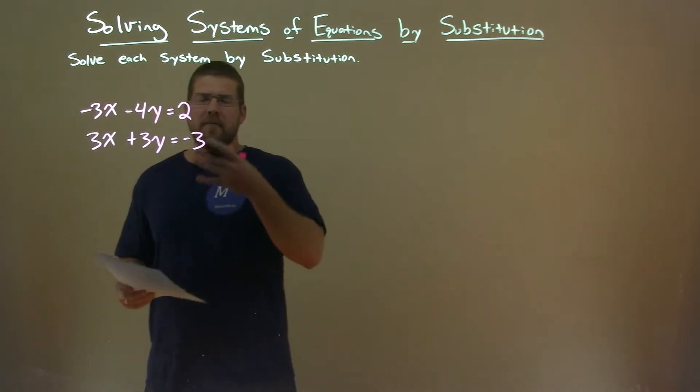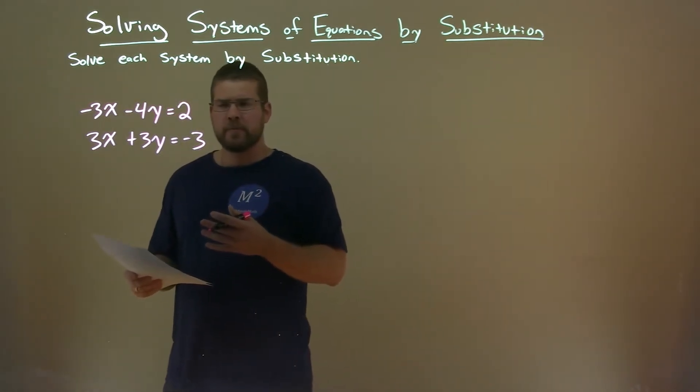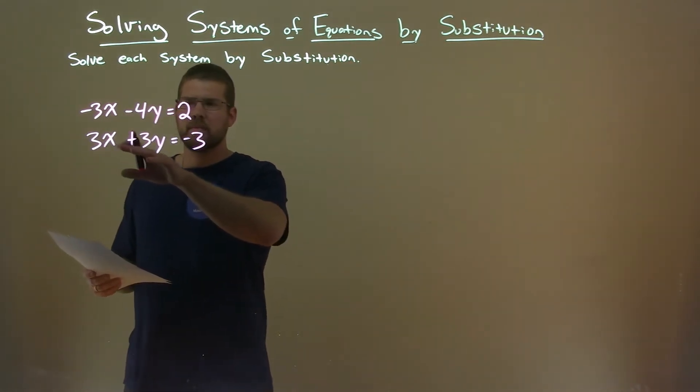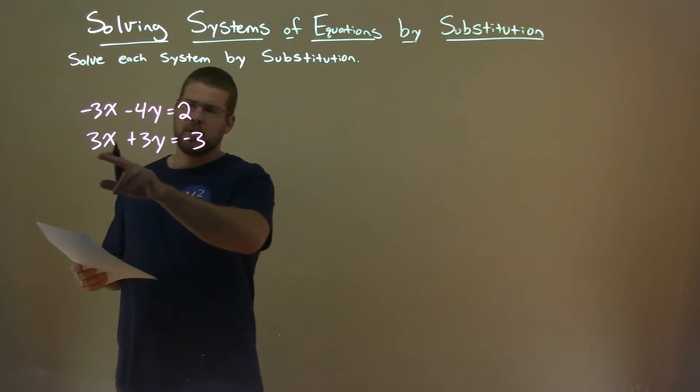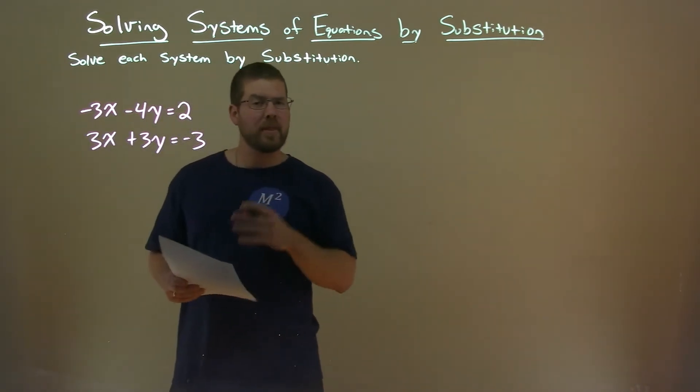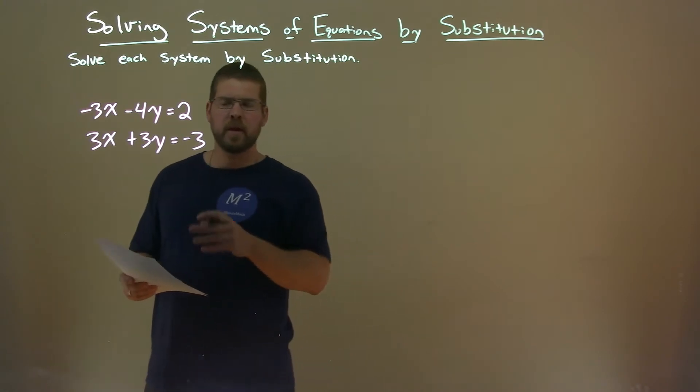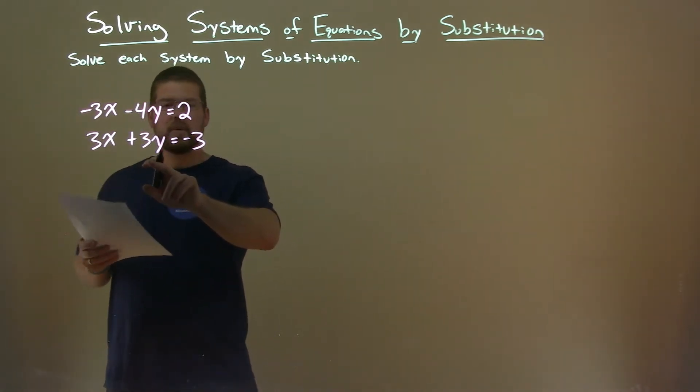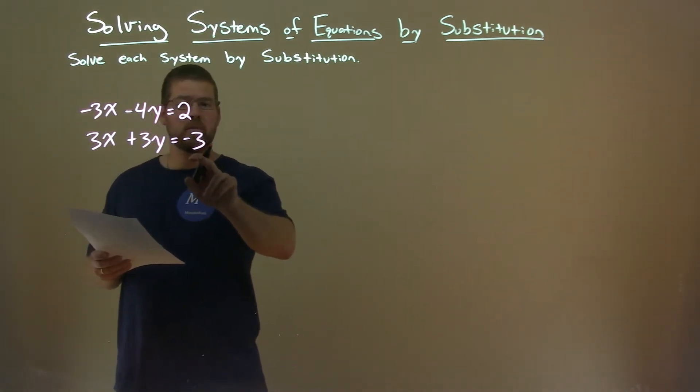Well, my goal is to try to get a variable by itself. Nothing really jumps out right away. The second equation has 3 going in all parts, so I think it'll be easy to get a variable by itself. So I'm going to try to get x by itself here. I'm going to subtract 3y to both sides.